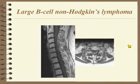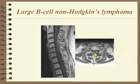This is a large B-cell lymphoma, with a little bit of heterogeneous enhancement within it. Given the correct history, abscess is not a bad second diagnosis because there is some heterogeneity following contrast.